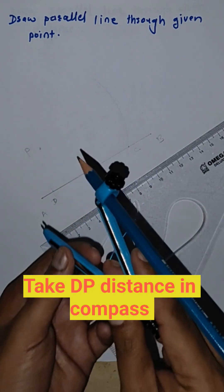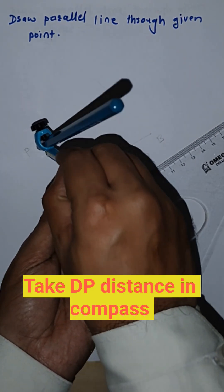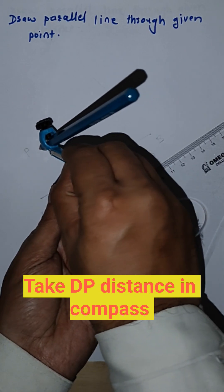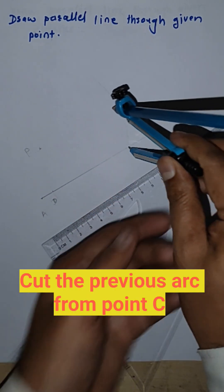Now from D to P. Take a distance D to P in a compass and cut the previous arc from C.